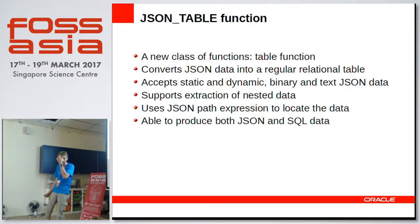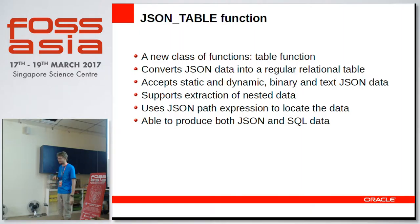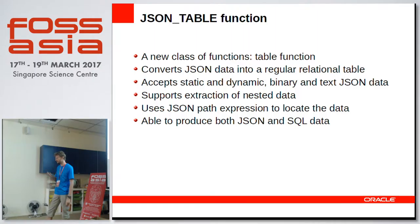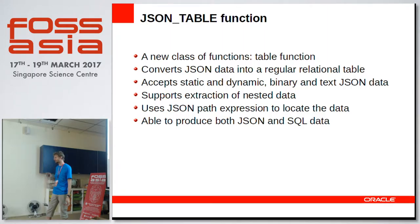Another function serving the opposite purpose — converting JSON data back into relational data — is the JSON_TABLE function. It's a new class of function called a table function, which isn't called in a WHERE clause or other conditions, but rather from the FROM clause. It returns a table that can be used as a regular table in any scenario: in a view, derived table, SELECT, subquery, and in stored procedures.